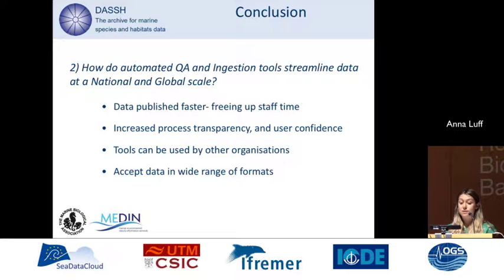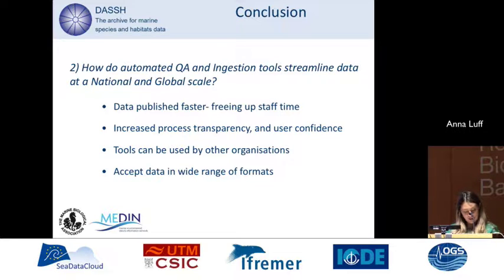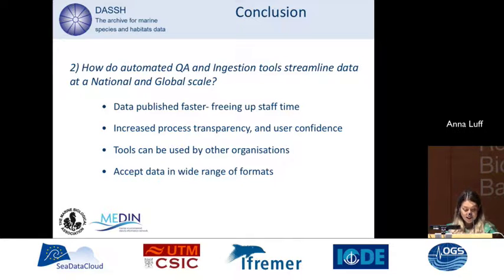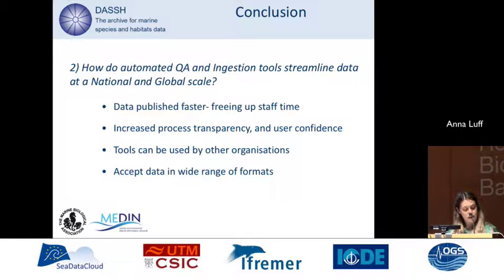How do automated quality assurance and ingestion tools streamline data at a national and global scale? Through streamlining our data lifecycle, we publish data quicker and our automated processes free up staff time. Our automated processes also increase transparency in data processing, leading to increased user confidence. Our tools can potentially be used by other organisations to streamline data processing on a national and global scale. We are also developing conversion tools that would allow us to accept data in a range of formats, including Darwin Core and legacy formats.